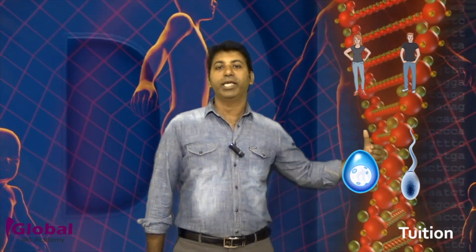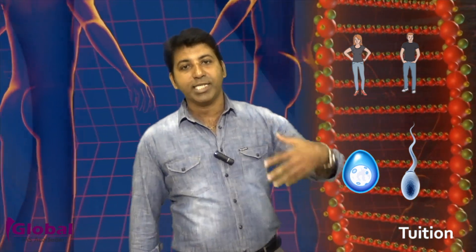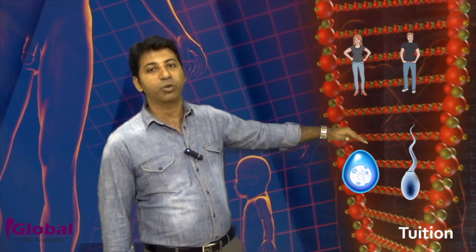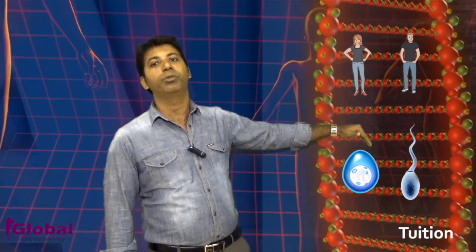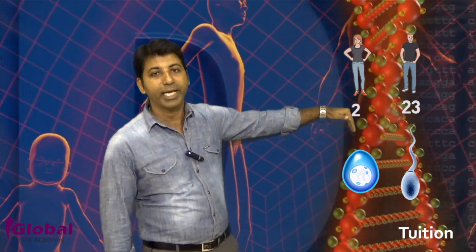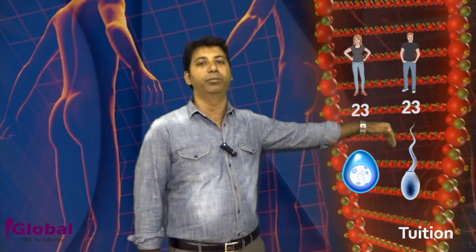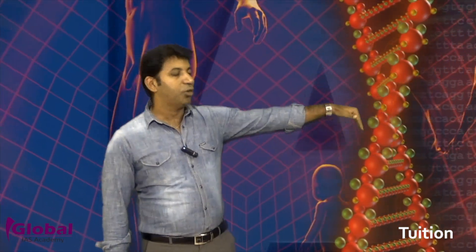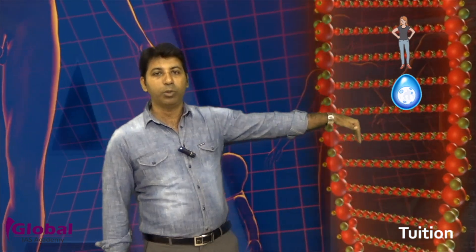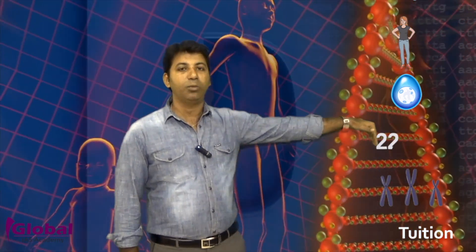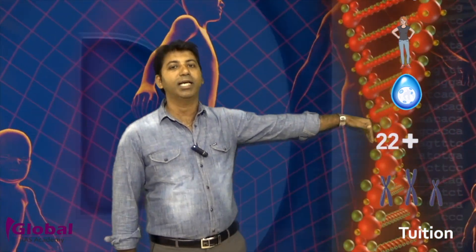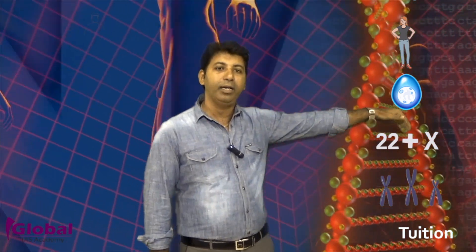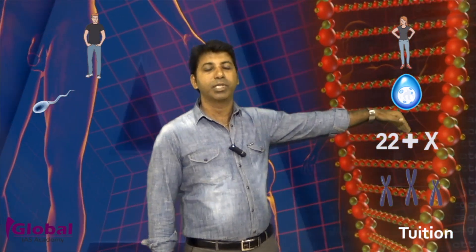In these two sexual cells, the 46 chromosomes are not present — it will be half, that is 23 chromosomes. So 23 chromosomes will be present in egg cells and 23 in the sperm. In the egg cells, this 23 is divided into 22 chromosomes plus one X chromosome, which is considered the sex chromosome.